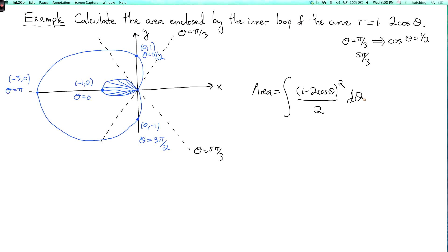Now, what are the limits of integration? The part of the curve we care about goes between theta equals 5 pi over 3 and theta equals pi over 3. So you might think that the limits of integration should be pi over 3 and 5 pi over 3, but that's not quite right.